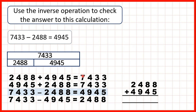If we get 7,433, then we can be confident this statement is correct. 8 plus 5 is 13, so we write 3 and carry 1. 1 plus 8 plus 4 is 13, so 3 and carry 1. 1 plus 4 plus 9 is 14, so 4 and carry 1. And 1 plus 2 plus 4 is 7. So we can be confident we've got the right calculation, because we've added our difference and our subtrahend and that's given us our minuend.